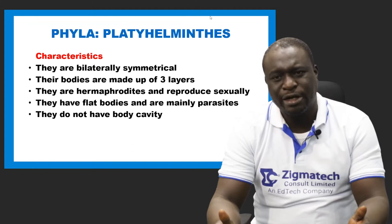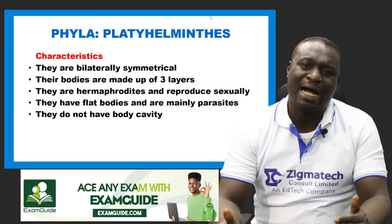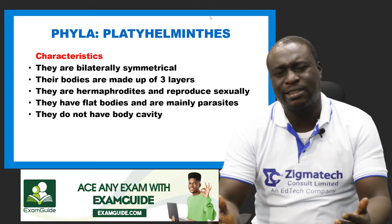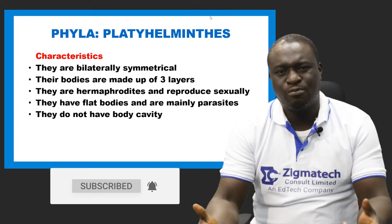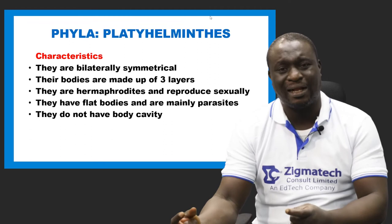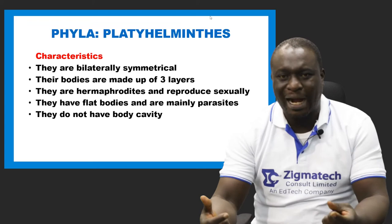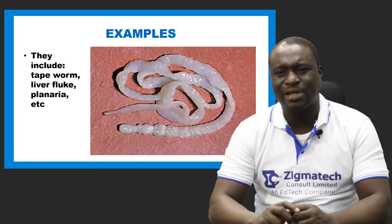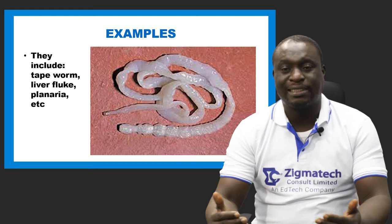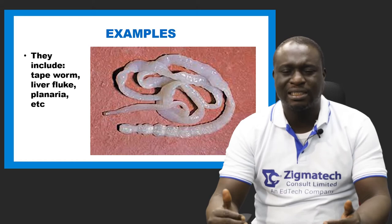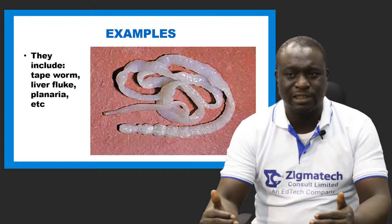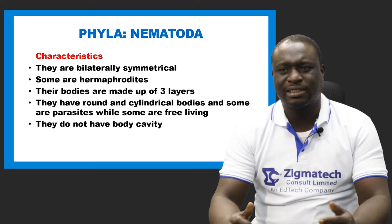Number five: they do not have body cavity. Tapeworm, for example, has no need for an alimentary canal because it feeds on already digested food from its host. Examples of Platyhelminthes include tapeworm, liver fluke, and planaria. You can see the diagram — that is a tapeworm.